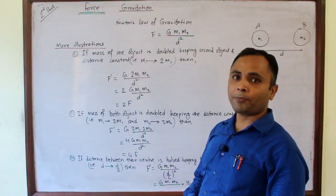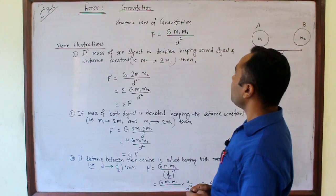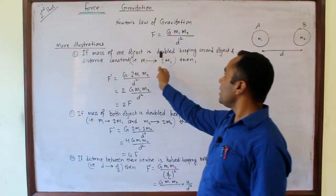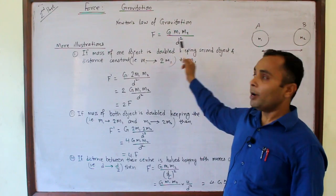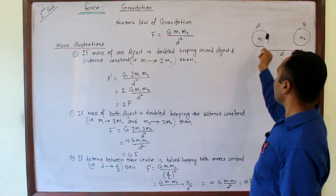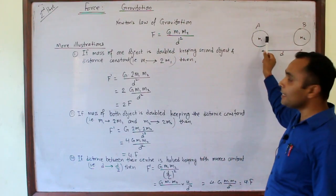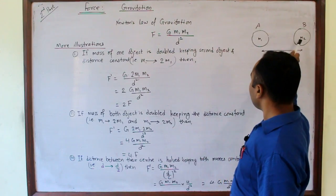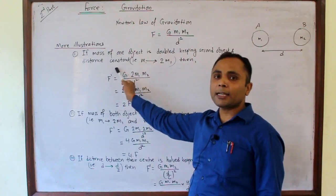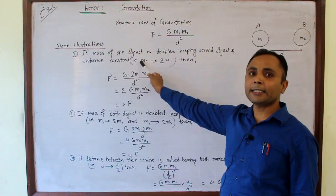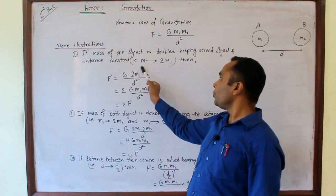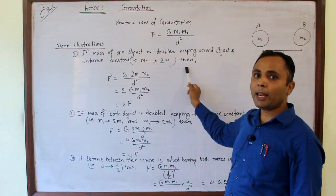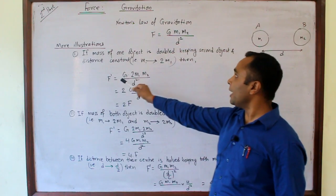What happens to the force of gravitation if the mass of one object is doubled? Suppose the mass of A is doubled, keeping the second object and the distance constant. That is, we are only changing mass M1 to 2M1.